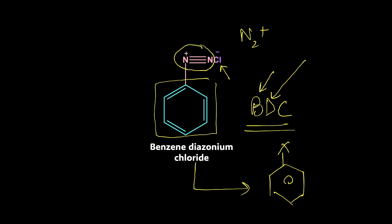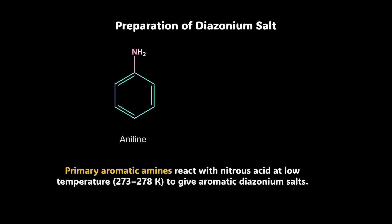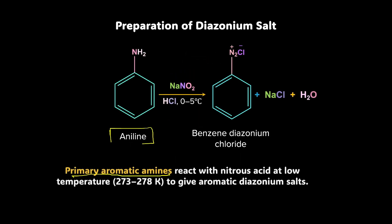So what we can do is, we can start with aniline. Now, this is the primary aromatic amine we are taking, which is aniline. This aniline is reacted with sodium nitrite in the presence of hydrochloric acid at low temperatures, 0 to 5 degrees Celsius.